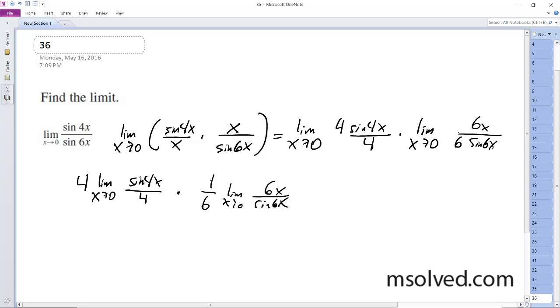I could set 6x equal to theta or something like that, but I can just leave it like this. So as this approaches 0, this becomes 4 times 1, this becomes 1, this becomes 1 sixth times 1,